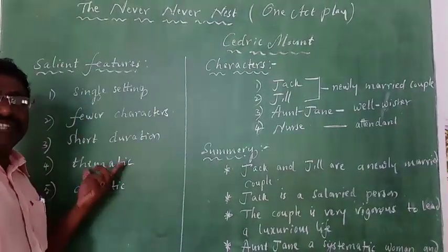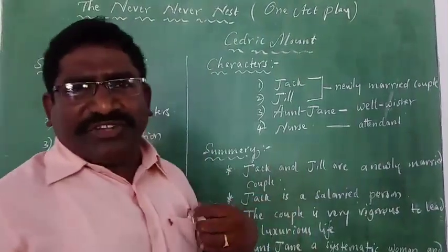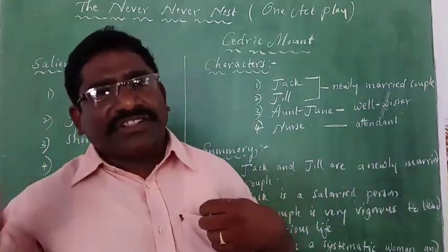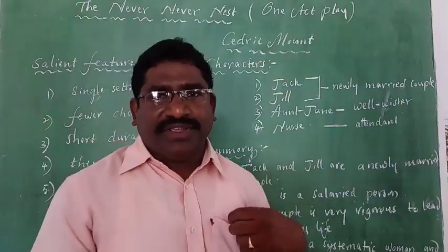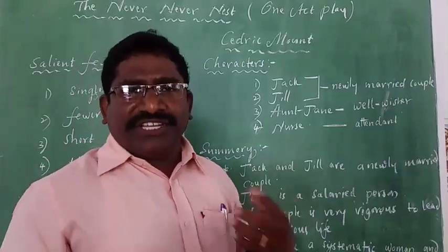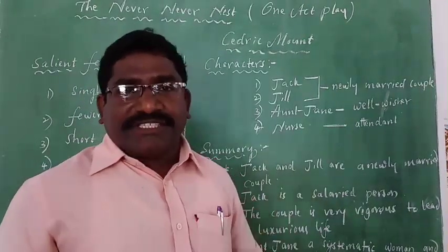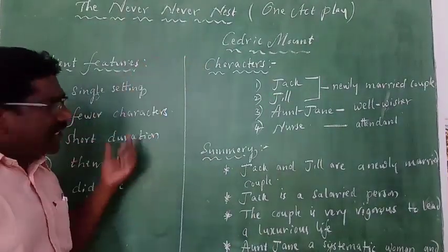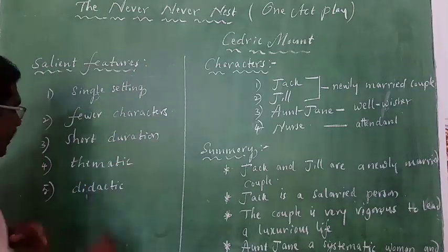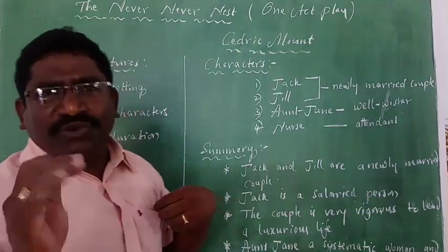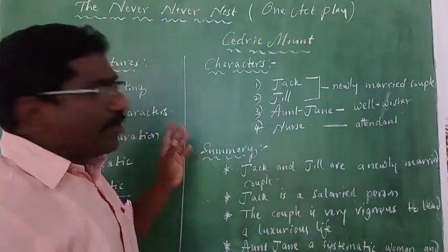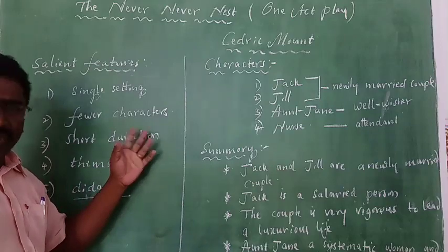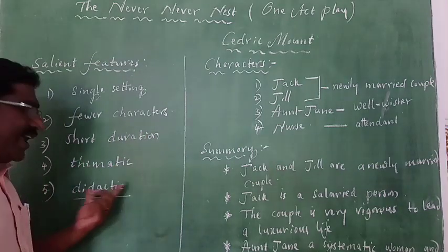Third, short duration. A drama may be 1 or 2 hours, but a one-act play must be only 40 to 45 minutes. Fourth, thematic — every action has a theme, and all the characters and story revolve around the theme. For example, the theme of Shatamana Bhavati is family relations; Happy Days is friendship. In the same way, a one-act play must have one theme. Fifth, didactic — it must give a message. At the end, you must get a moral from the one-act play. These are the salient features: single setting, fewer characters, short duration of 45 minutes, thematic — must have a theme — and didactic — must give a message.